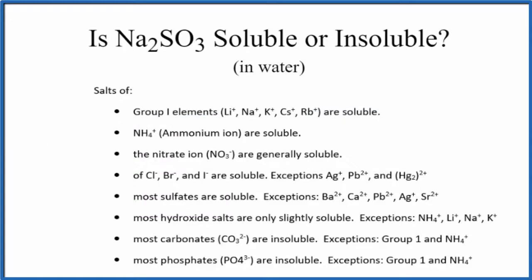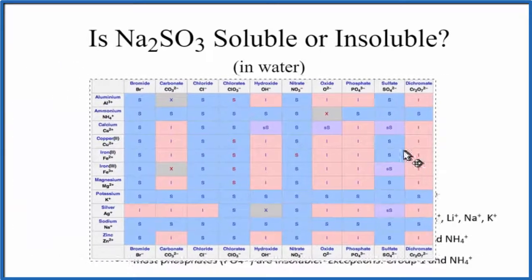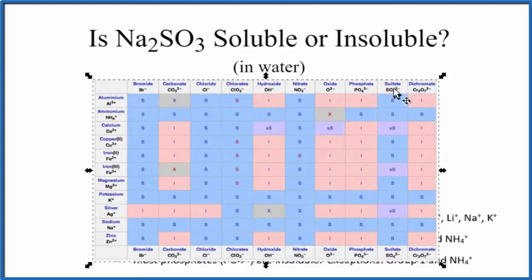We could also look at a solubility chart. The problem is though when I look at my chart I see the sulfate ion but I don't see sulfite. I don't see SO3 2- so this really doesn't help me.